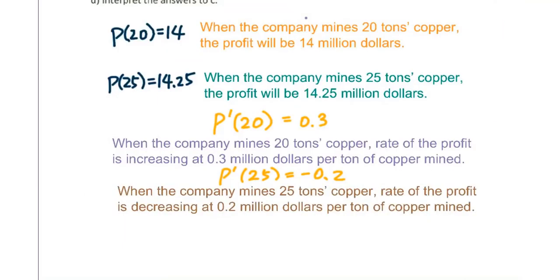Let's go to part d: Interpret the answers to c. We have P(20) equals 14, which means when the company mines 20 tons copper, the profit will be 14 million dollars. P(25) equals 14.25 means when the company mines 25 tons copper, the profit will be 14.25 million dollars.